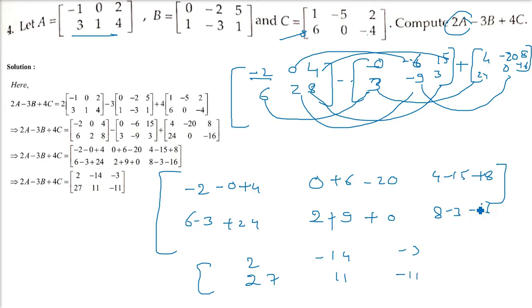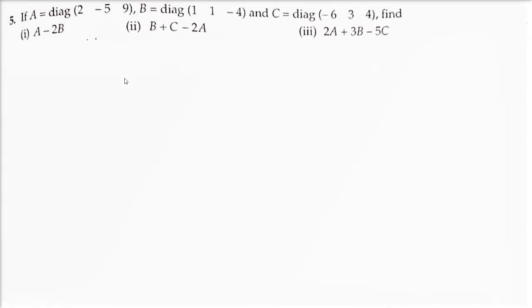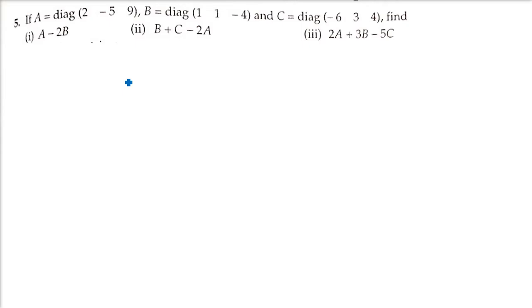This is how we do 2A minus 3B plus 4C — just multiply the scalar and do the computations. Make sure the order is the same. A, B, C are given in diagonal form, and then we have to find all these results.